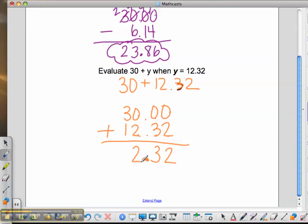0 plus 2, 2. 3 plus 1, 4. So, here is your answer for adding decimals.